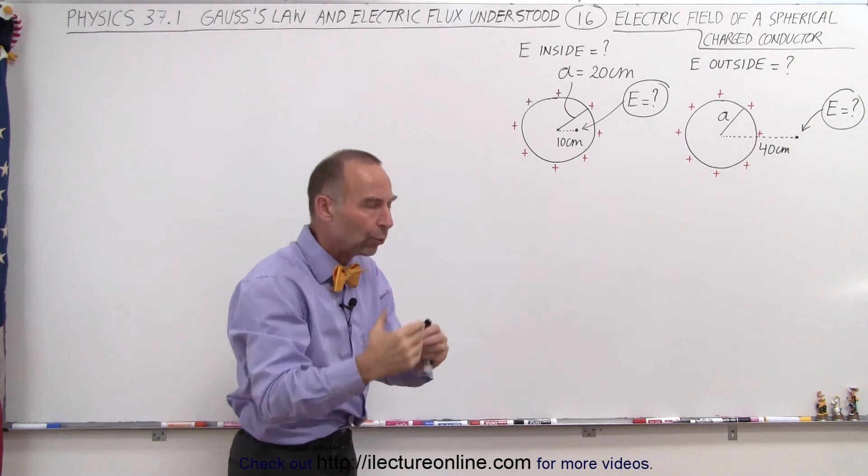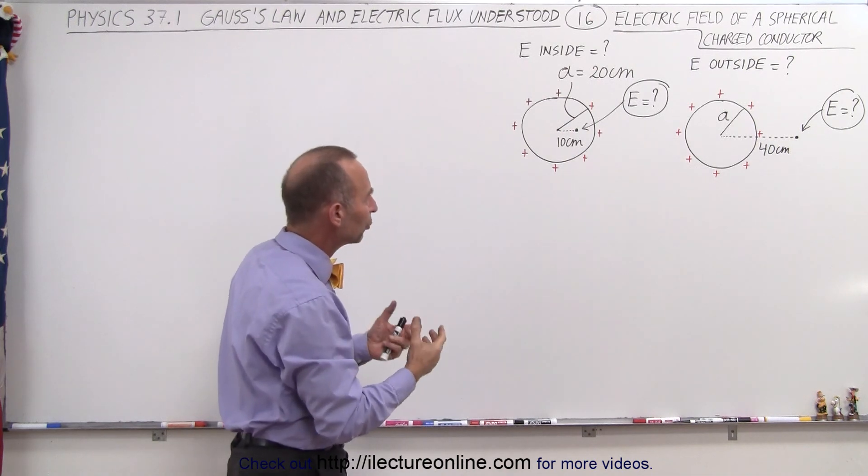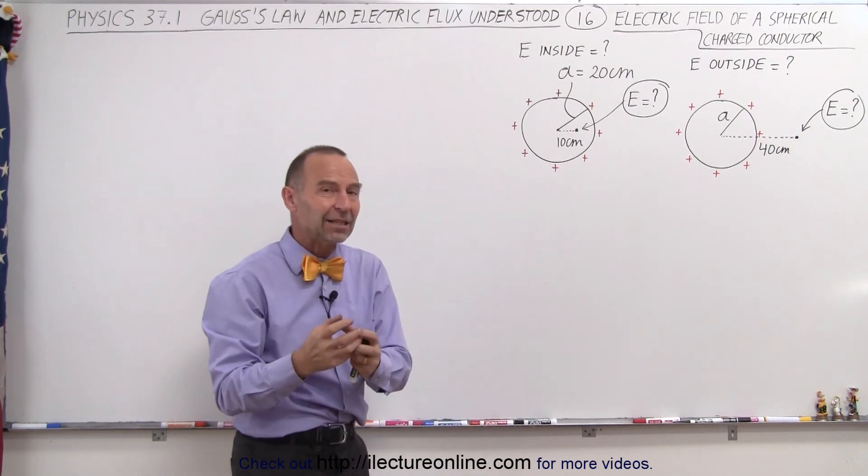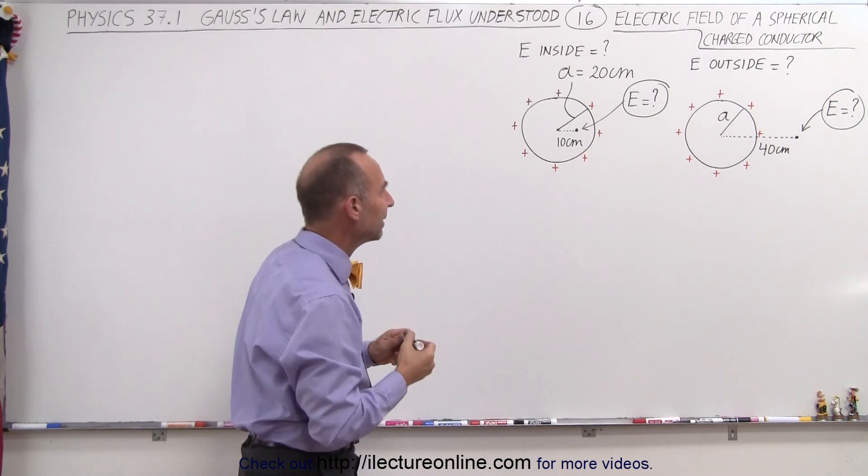When the radius of the sphere, which I used the letter A to indicate the radius of the sphere, is equal to 20 centimeters. In other words, we're trying to find the electric field inside the conductor.